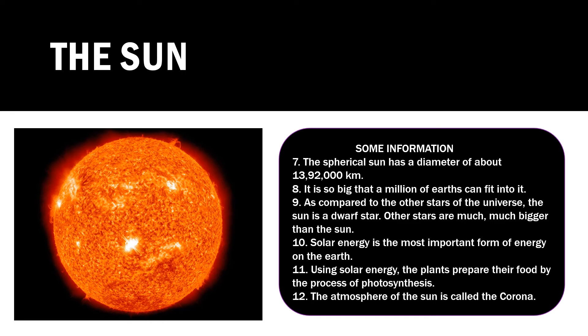Solar energy is the most important form of energy on the earth. Using solar energy, plants prepare their food by the process of photosynthesis. And if plants are there, we are there. The atmosphere of the sun is called the corona.